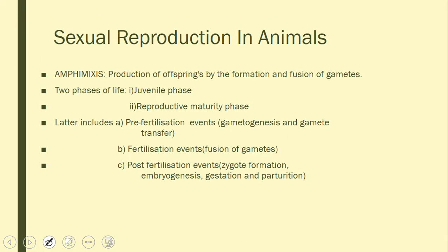Now we go to sexual reproduction in animals. The term 'amphimixis' — amphi means both mixing — refers to the production of offspring by the formation and fusion of male and female gametes.